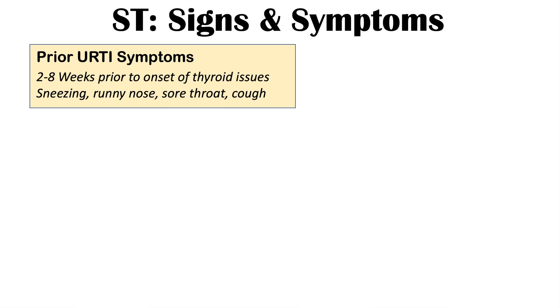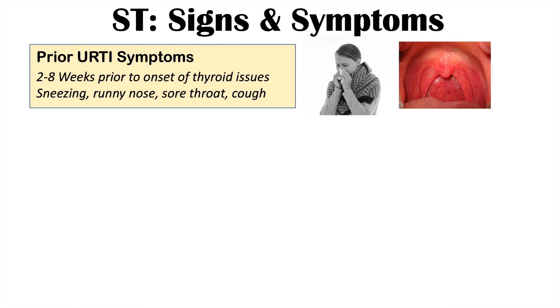Now let's talk about the signs and symptoms of subacute thyroiditis. Because this is often preceded by a viral infection, especially an upper respiratory tract infection, there can be associated signs and symptoms of a URI that would have occurred about two to eight weeks prior. So it's important to take a good history from the patient. These symptoms can include sneezing, runny nose, sore throat, and a cough.